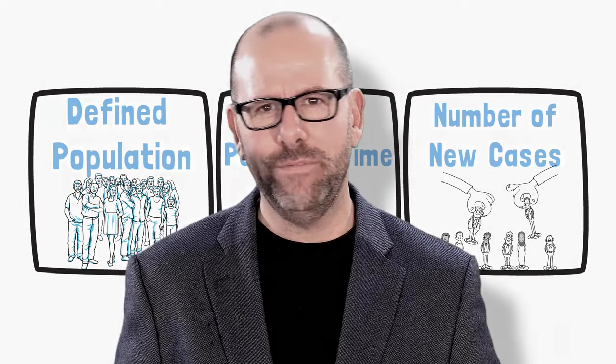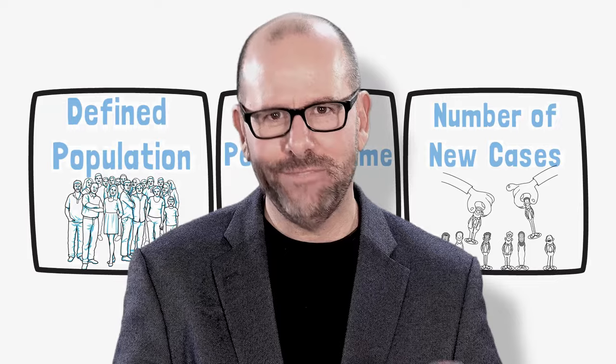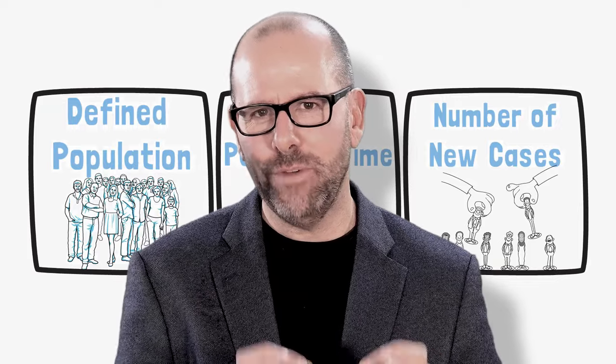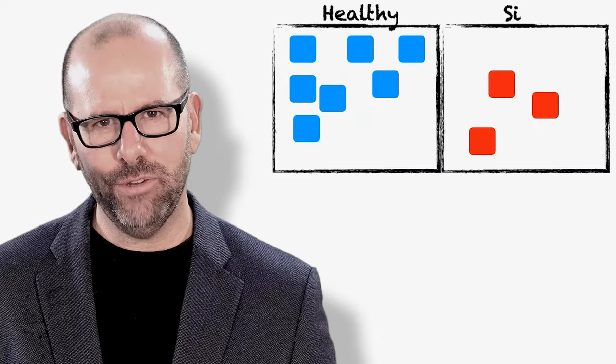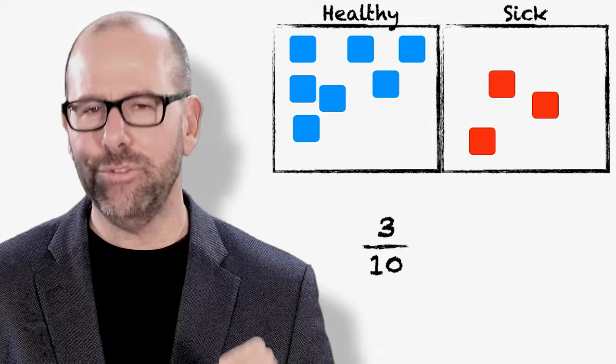Now, if you've watched my video on incidents and prevalence, you'll notice that the way I've described risk is very similar, if not exactly the same, as the way I would have described incidents. If we have 10 people and we look at them over a period of one year and three of them develop cancer within that year, we would have said the risk of getting cancer is 3 over 10, which is 30%.